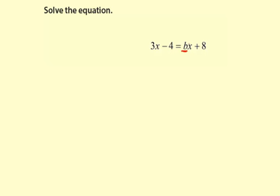Now, even though you have this unknown constant here, b, the steps are exactly the same. The first thing we need to do is get all the variable terms on one side of the equation. So what I'm going to do is I'm going to subtract b times x from both sides.